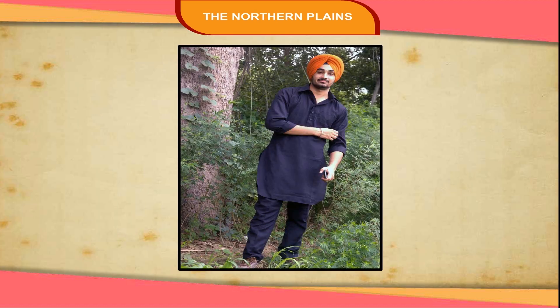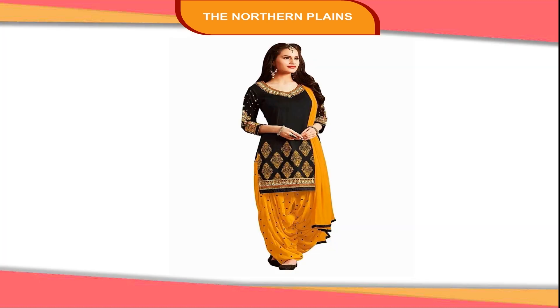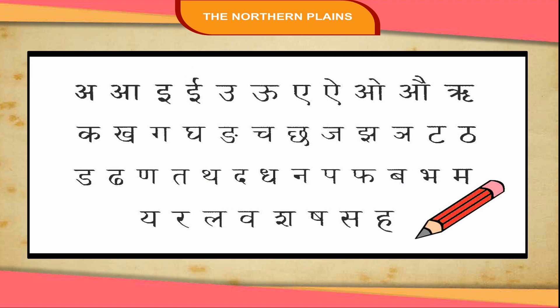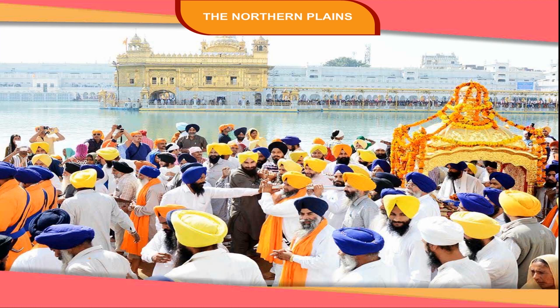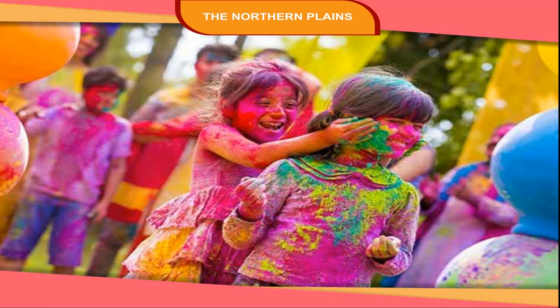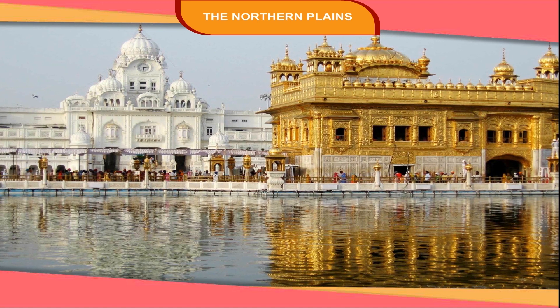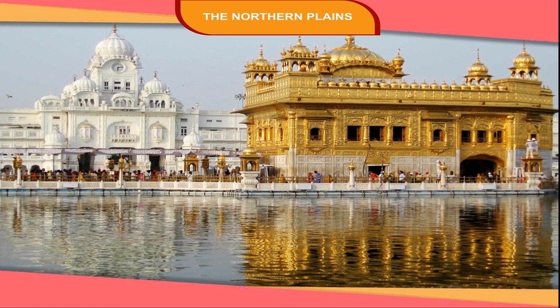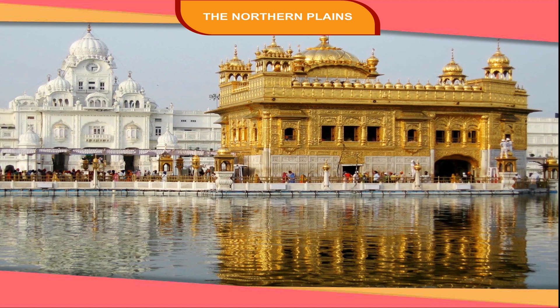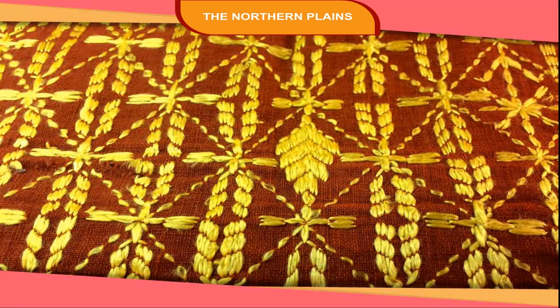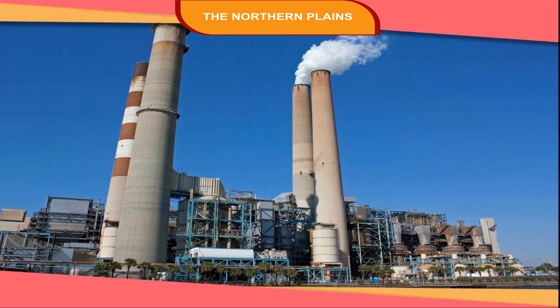Punjabi men wear kurta, lungi and turban, and women wear salwar kameez. Punjabi and Hindi are spoken in the state. Festivals celebrated in Punjab are Guru Purab, Baisakhi, Holi and Diwali. Amritsar is the famous city, also known as the city of the golden temple. The main industries of Punjab are textiles, sugar, fertilizers, paper and sports goods.